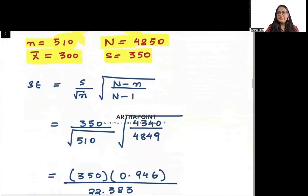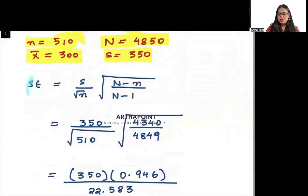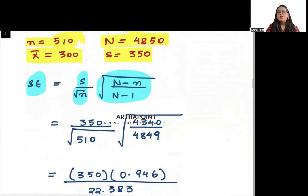So first of all, we will go ahead and find out the standard error in this case. The standard error can be written as s over root n times square root of (N minus n) over (N minus 1). So our population size from which this sample is collected is 4850.